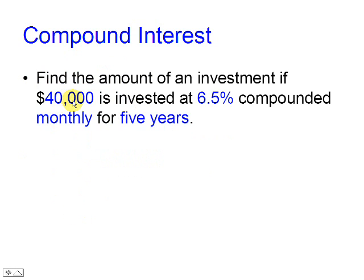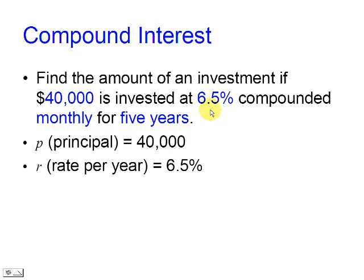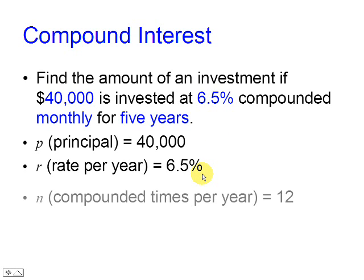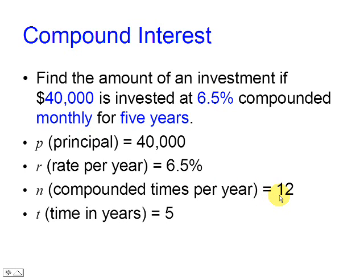In our case the principal is 40,000. The nominal rate per year is 6.5, the number of compounded periods per year is 12, and the total time is 5 years.